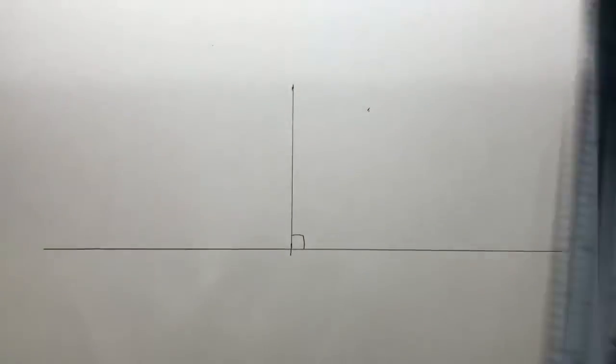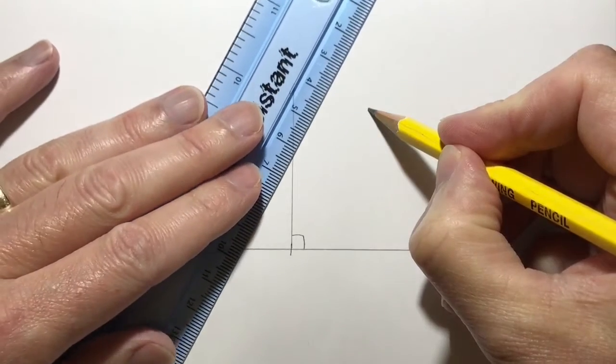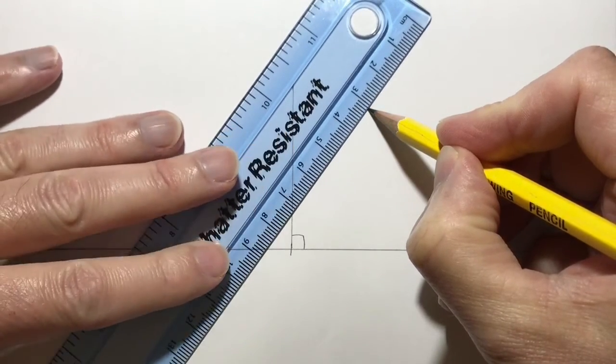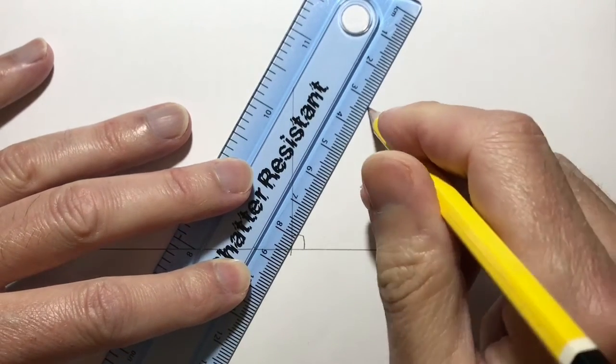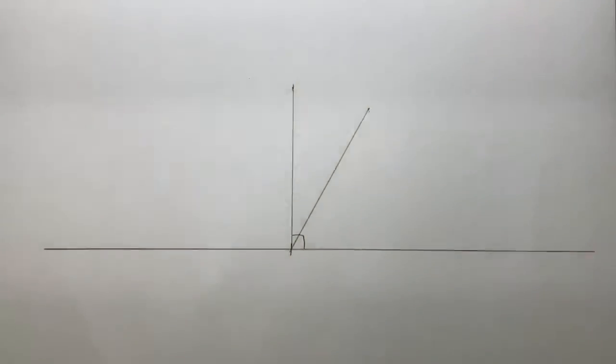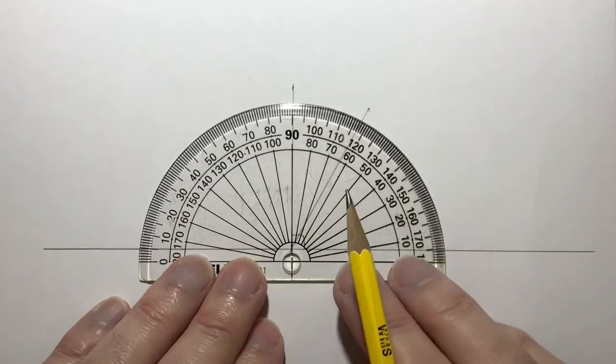Again, bring the ruler in and again, place my pencil on there, slide the ruler up to the pencil and then angle the ruler round to the center of the angle there. Draw our line. Let's have a look, see how accurate this one is.